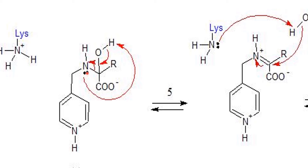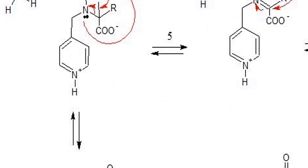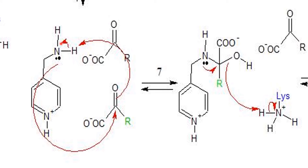To form the keto group, the lone pair just transferred to the nitrogen attacks the hydrogen on the oxygen, and the electrons from that O–H bond are used to make the double bond with the carbon, forming a ketone. That ketone kicks out the nitrogen, giving us the halfway point — pyridoxamine phosphate — along with a free keto acid. Now we want to convert another keto acid into an amino acid, so the lone pair of the PMP nitrogen attacks the electrophilic carbon of the new keto acid.